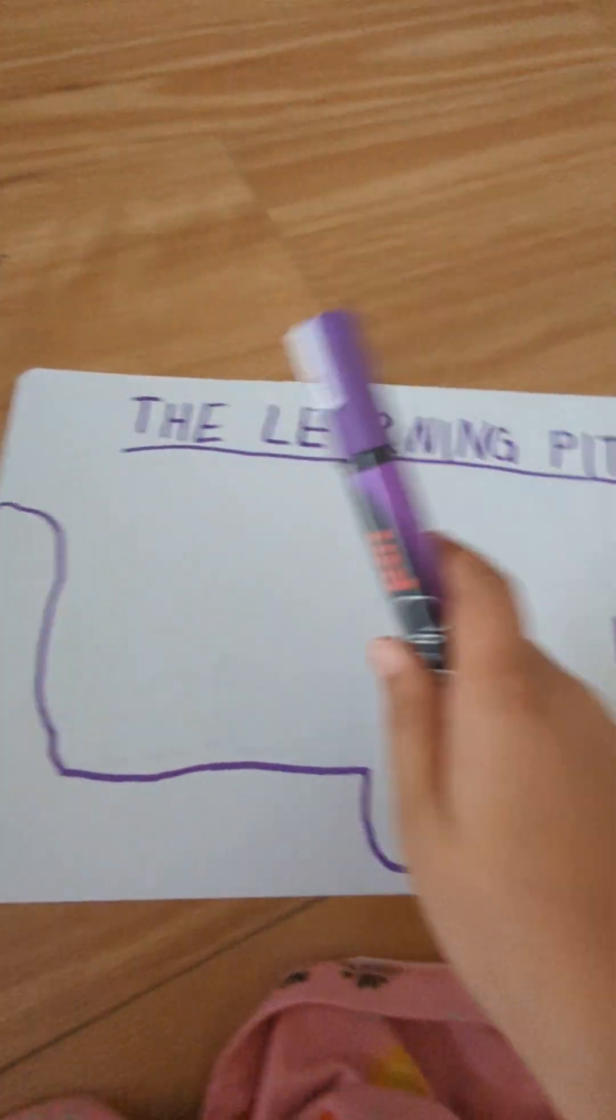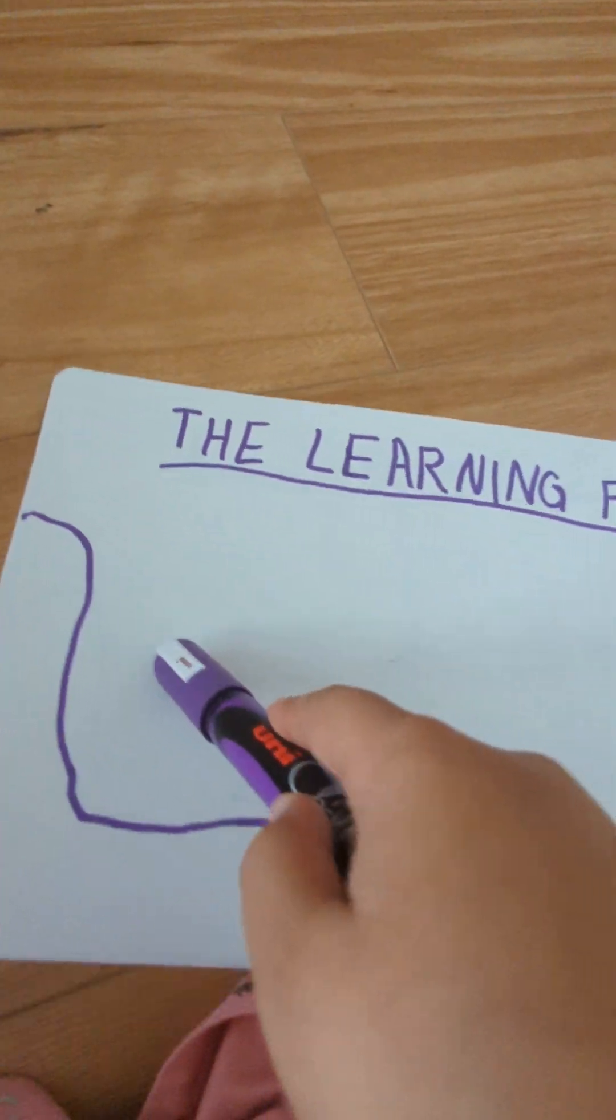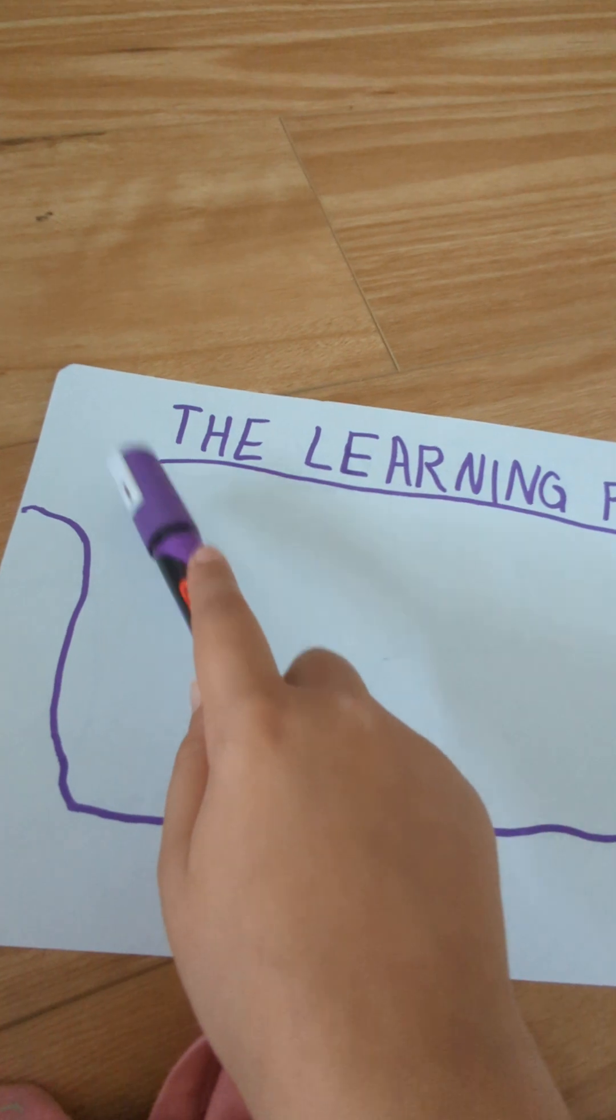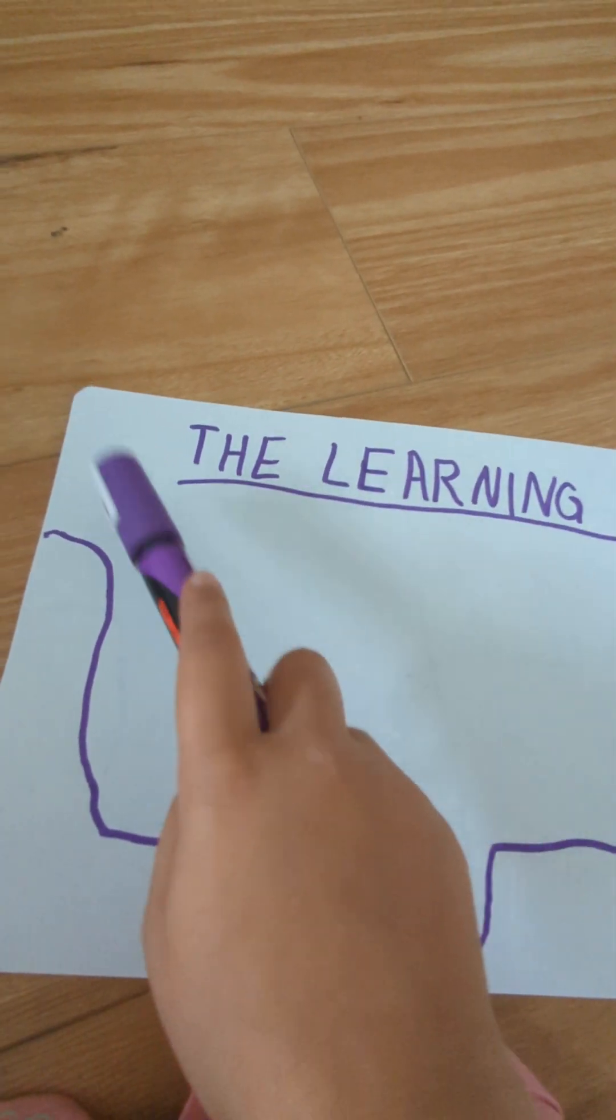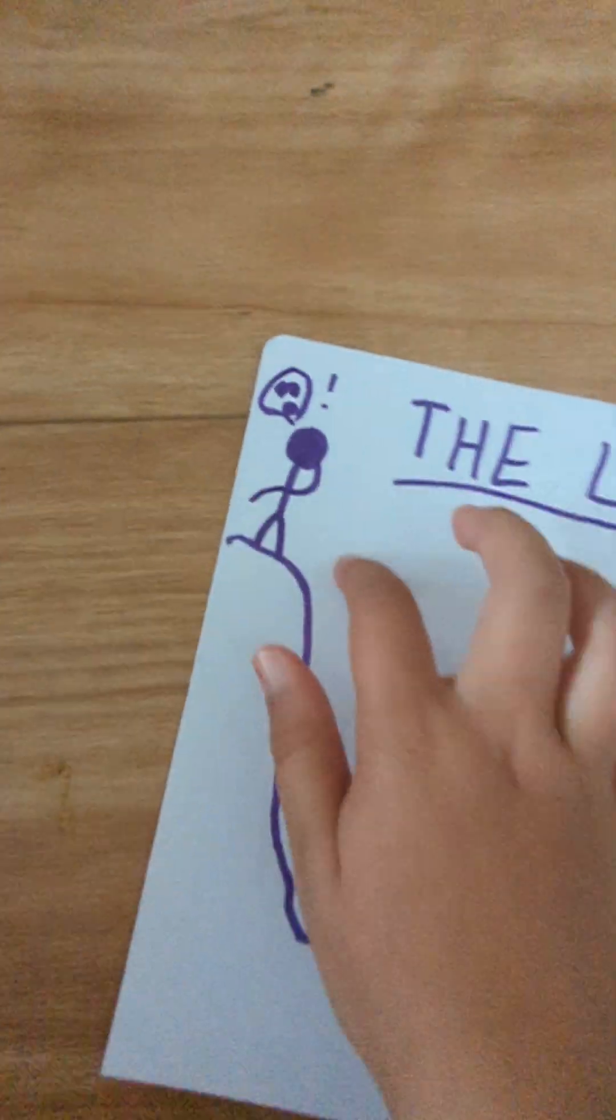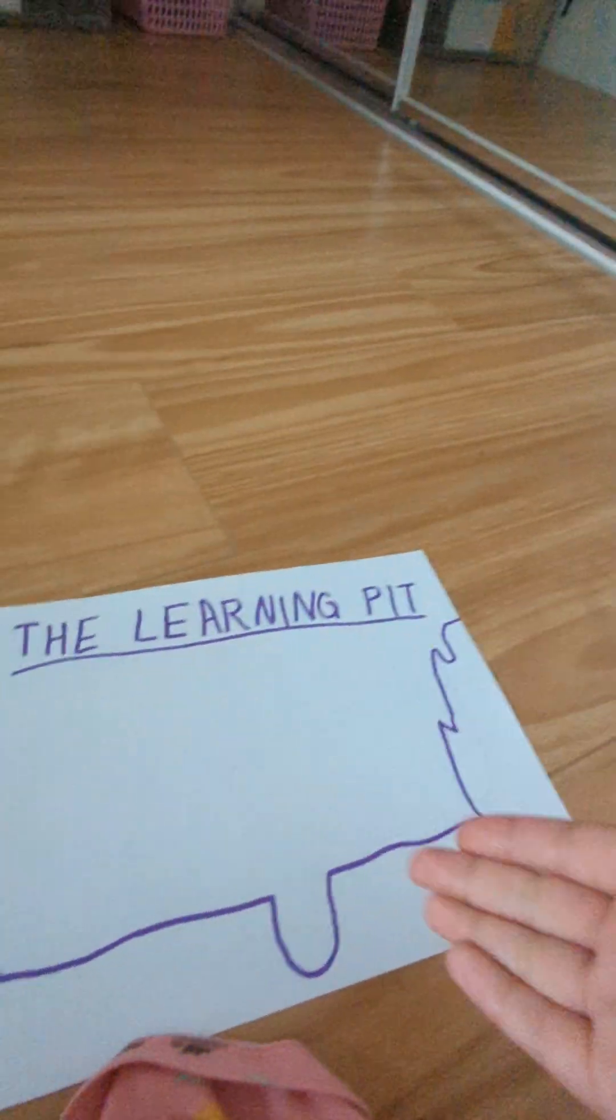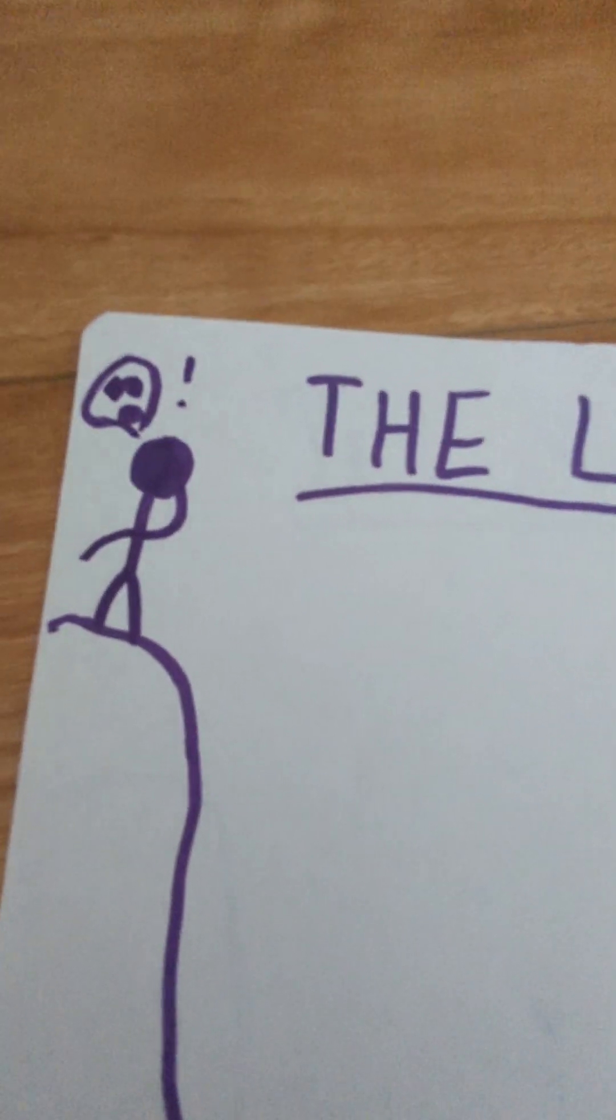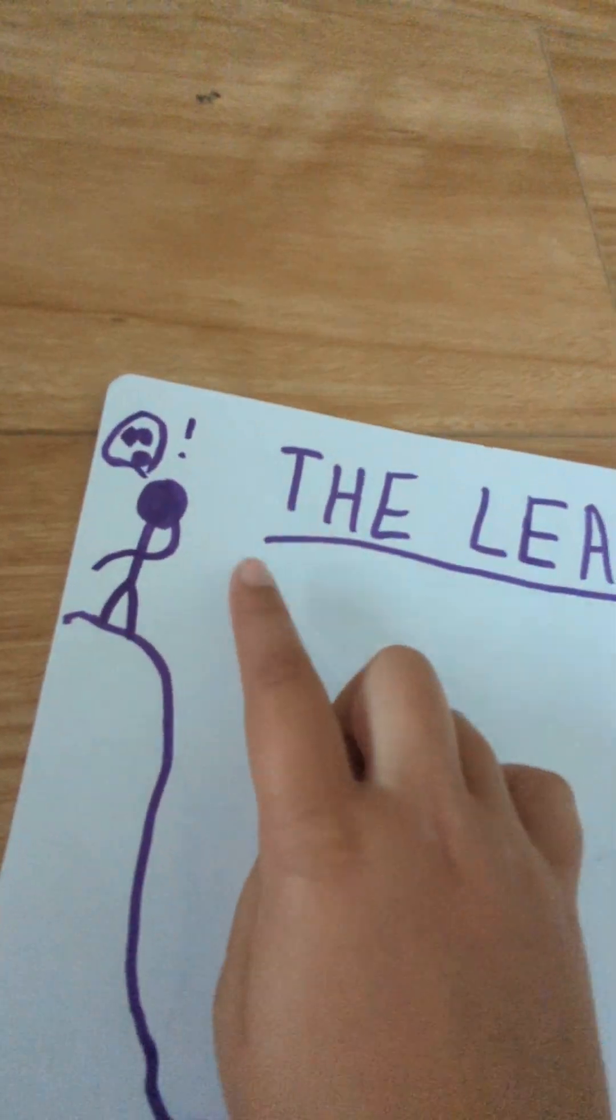So basically this is the learning pit. It all starts from here. Here you are, you just teleported on the top of the learning pit. Now you take a step forward and you will appear in three, two, one.